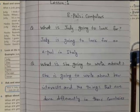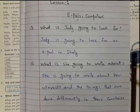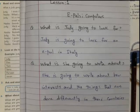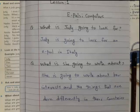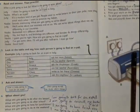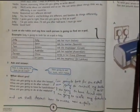It is the answer. In the second part of the question: what is she going to write about? The answer is: She is going to write about her interests and the things that are done differently in their countries.